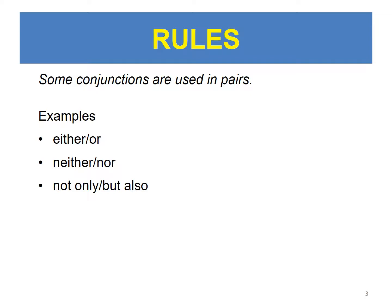Some conjunctions are used in pairs. Examples: Either, or. Neither, nor. Not only, but also.